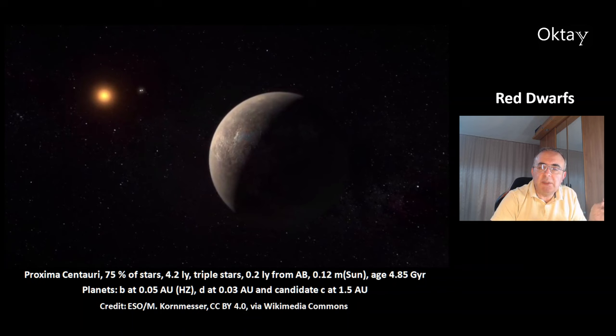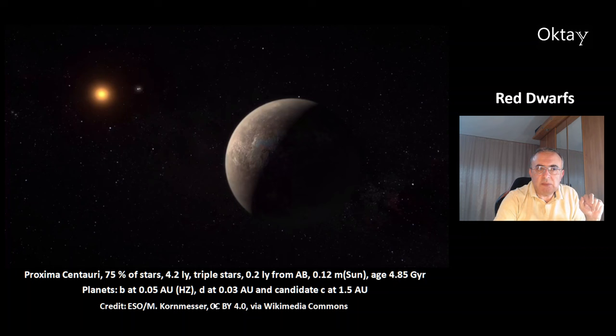Proxima Centauri could have two or three planets. Planet B is the most interesting, with a distance of 0.05 AU, which places it in the habitable zone. There is also planet D, an inner planet, and a planet candidate C at 1.5 AU further out. One AU is the sun-Earth distance of 150 million kilometers.